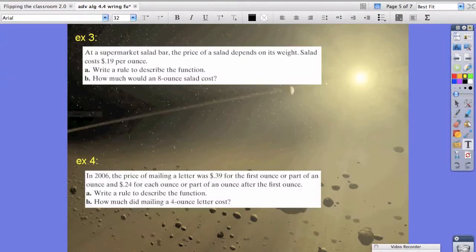So let's try example 3. It says, at a supermarket salad bar, the price of a salad depends on its weight. Salad costs 19 cents per ounce. Write a rule to describe the function. And part b says, how much would an 8 ounce salad cost?